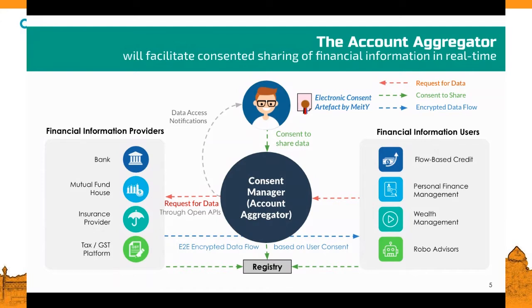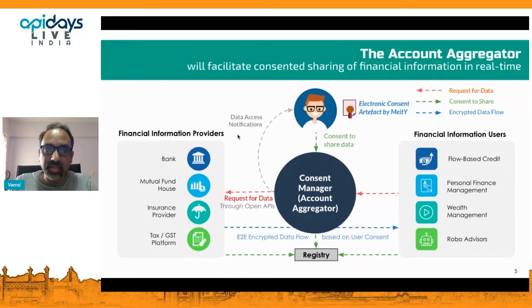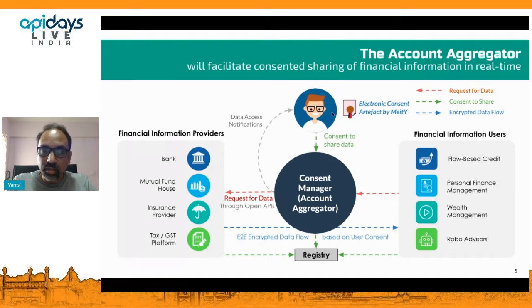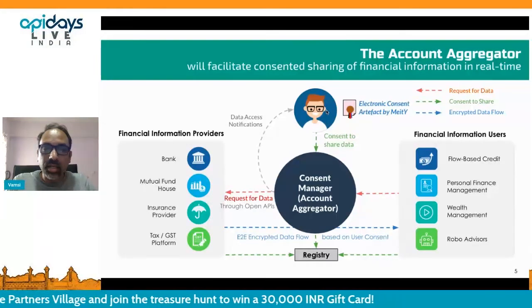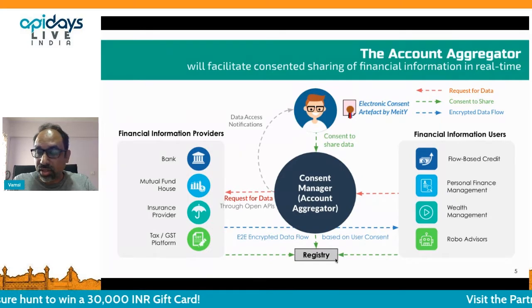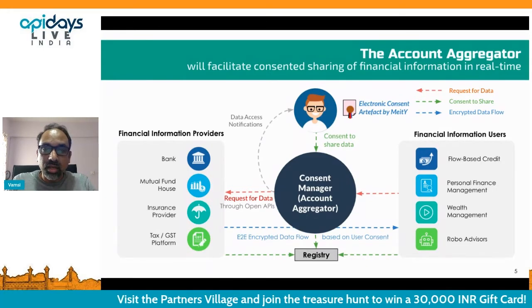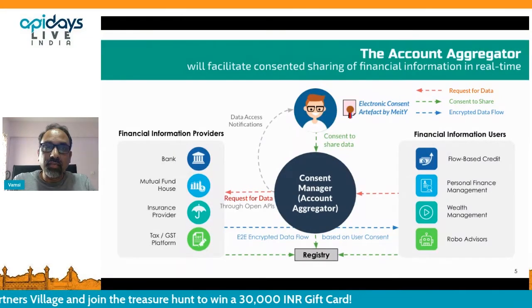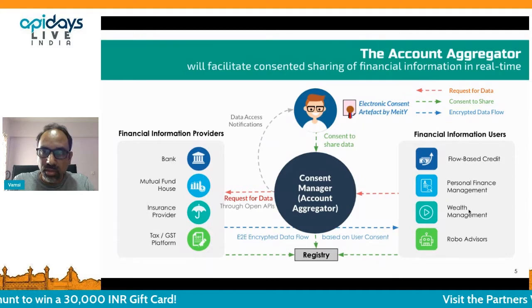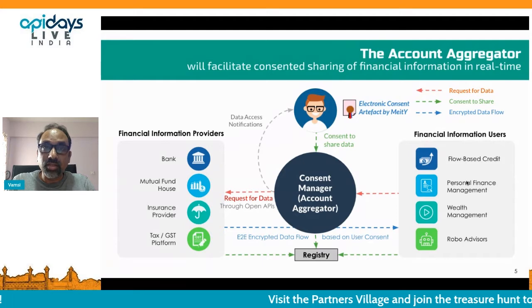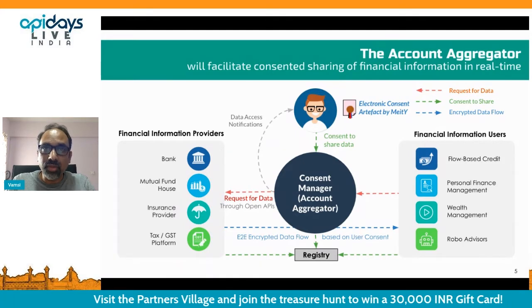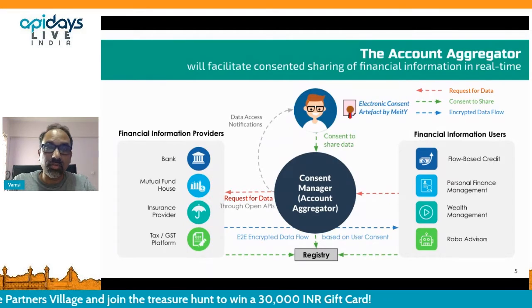If you do a double click on this consent layer, at the center are intermediaries who are really consent managers. The term account aggregator is merely to reflect that they can connect to multiple systems where your accounts are managed — could be your bank account, insurance account, mutual fund account, or pension fund account. They lay pipelines to consumers of data. On the left side are the providers of financial information, or FIPs. On the right side are the users of data, the financial information users. The center of all of this is, of course, the citizen. At the bottom you see something called a registry, which is critical in terms of enabling all these players.